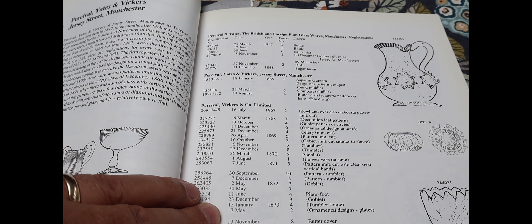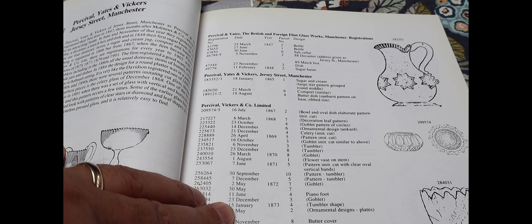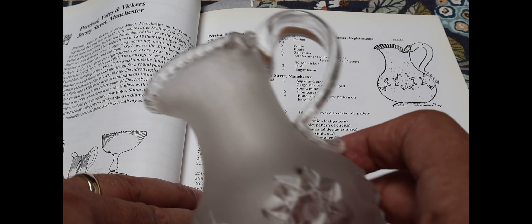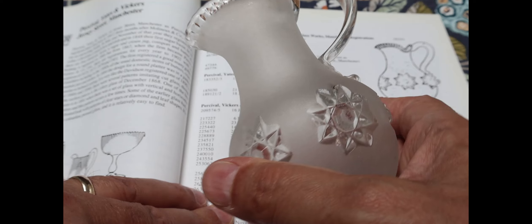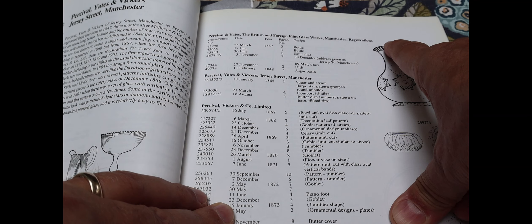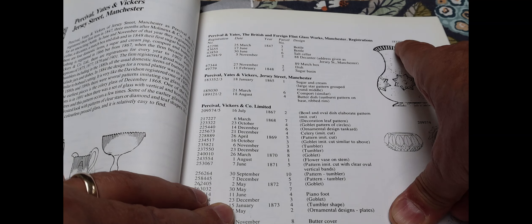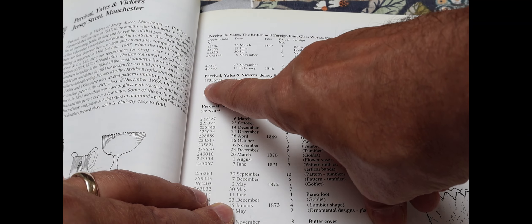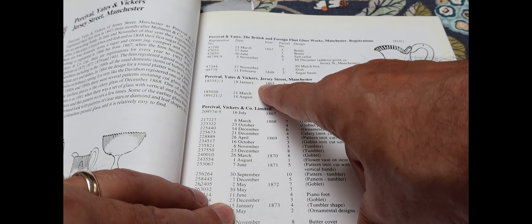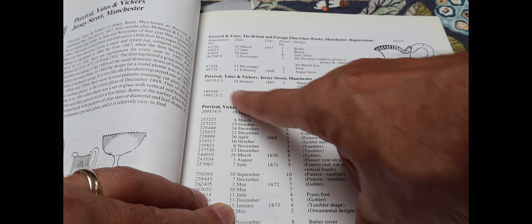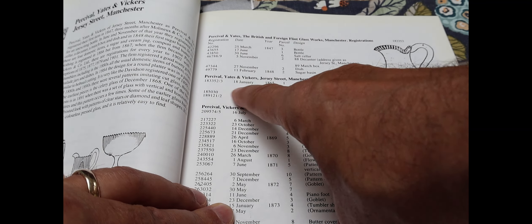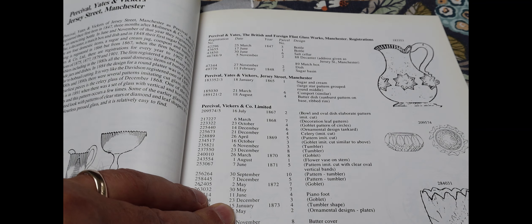So this book is the identification of English pressed glass by Jenny Thompson and here is the little jug I'll show you in fact here it is with the same handle. It's got a registered number one eight three three five three and that is that one here. So it was registered on the 18th of January 1865 and it's got two numbers a five two and five three so there's a sugar bowl and a creamer so I'm still looking for the sugar bowl. 18th of January 1865 you don't get any more precise than that.